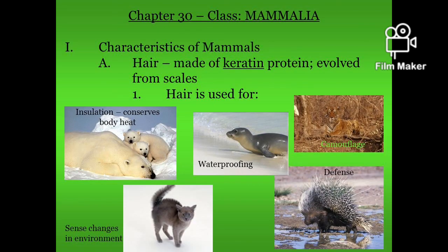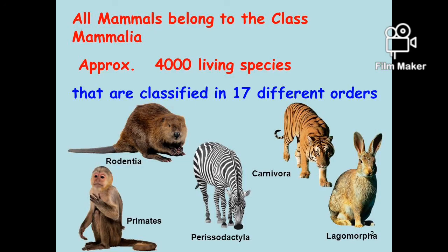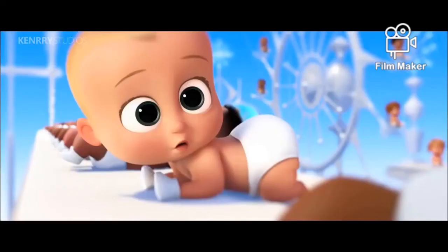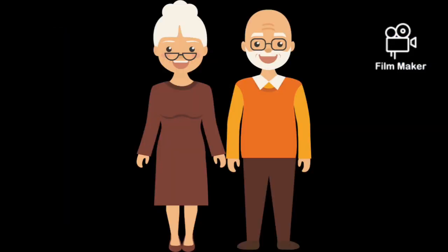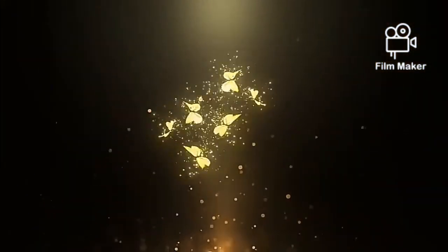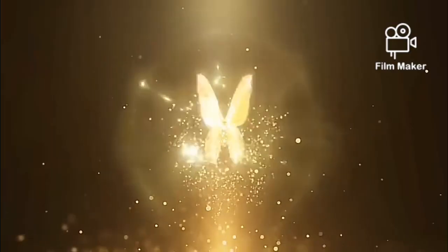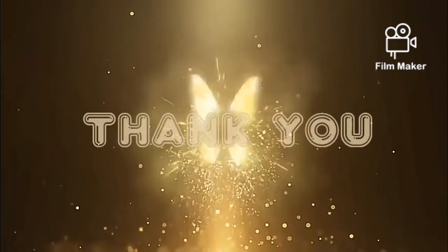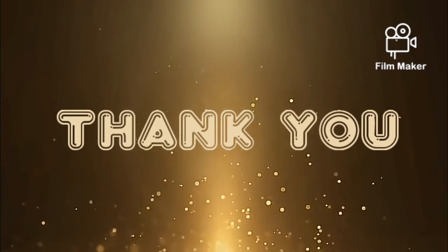And the last are mammals. Mammals are creatures which have hair, and that hair is made up of keratin protein. This hair is used for insulation, waterproofing, camouflage, defense, and to also adapt to the climate. The best examples of mammals are none other than we ourselves. Thank you.